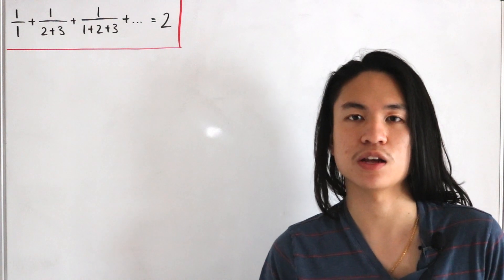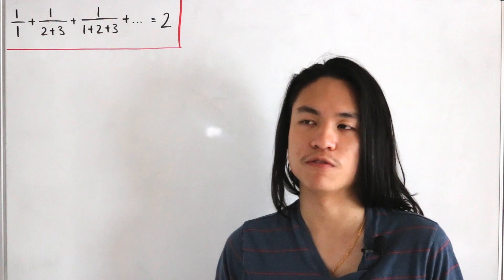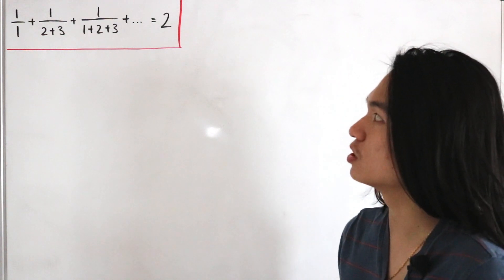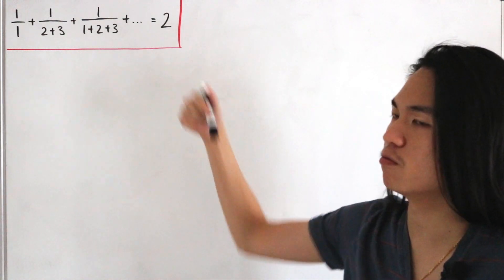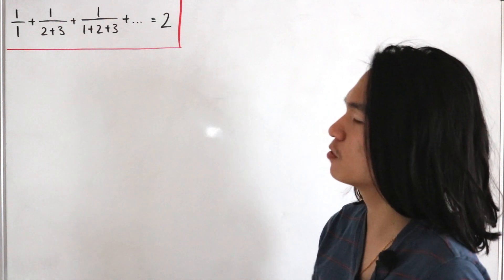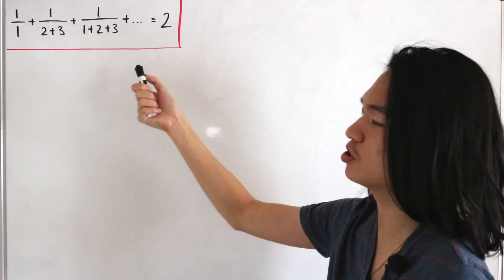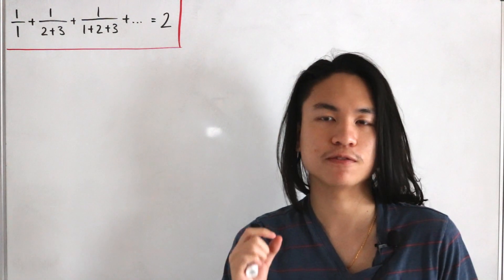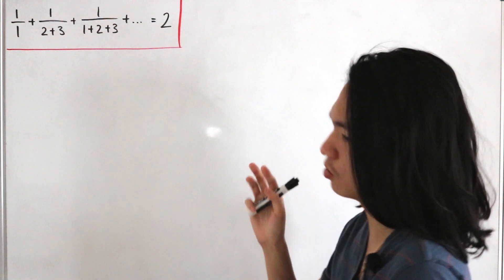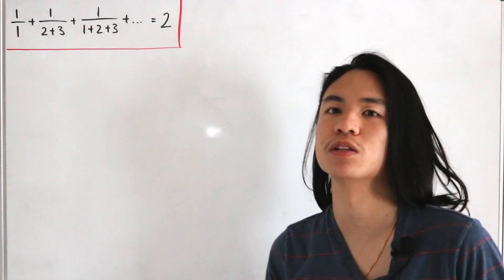There are two proofs: one analytical and the second a visual perspective. One spoiler: if you look at the denominator closely, the denominators actually form a summation, and if you analyze that carefully, they form the sum of the natural numbers.